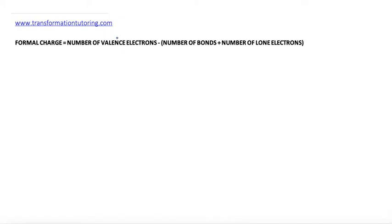The number of valence electrons is equal to the group number of where your element is located. Groups are vertical columns. If your element is located, for example, in group 5, then it will have 5 valence electrons. Number of bonds refers to the number of bonds that your atom is directly attached to. And number of lone electrons are the dots around your atom.